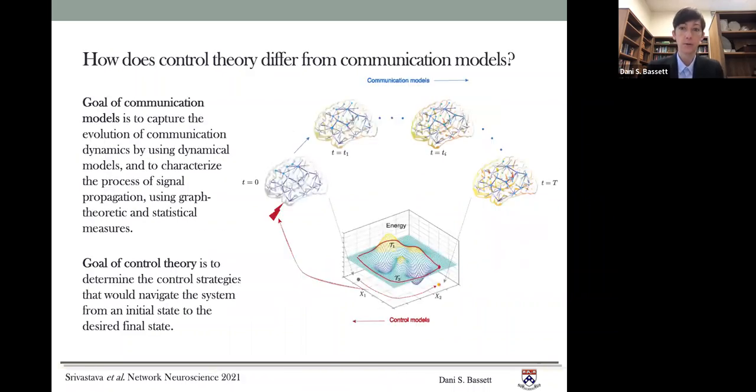Now, how does control theory differ from communication models? Well, first, they differ in their goals. The goal of communication models is to capture the evolution of communication dynamics by using dynamical models and then to characterize the process of signal propagation using graph theoretical and statistical measures. In contrast, the goal of control theory is to determine the control strategies that would navigate the system from some initial state to some final target state.